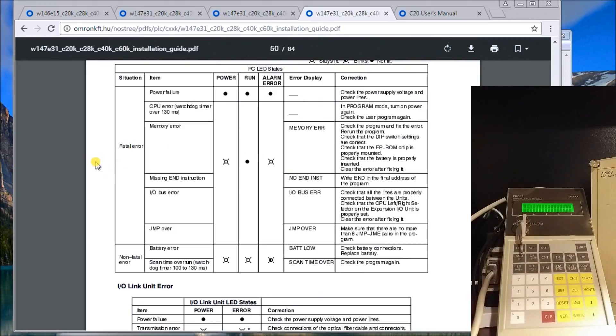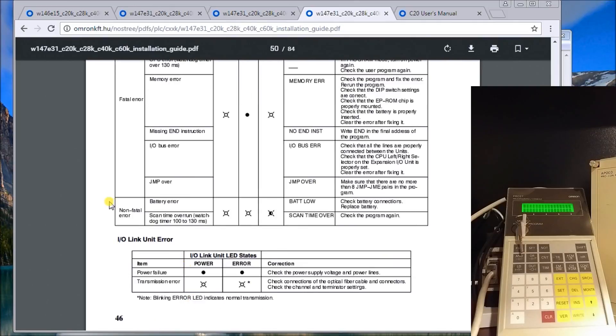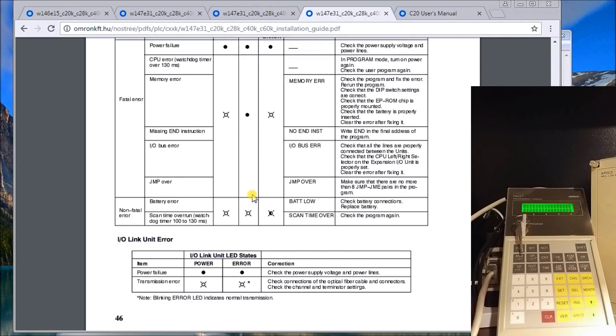Within this installation guide, there's actually a chart here that describes the fatal errors and the non-fatal errors, both on the main unit as well as on the link I.O. units that you add to the system.